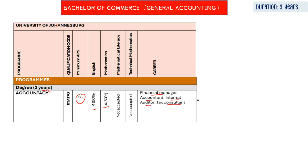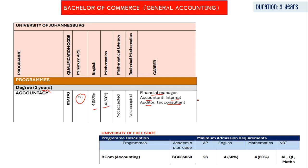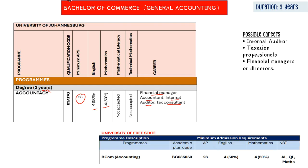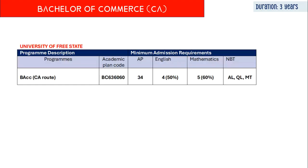With a degree in accounting you can become a financial manager, accountant, internal auditor, or tax consultant. This is general accounting — it is not the CA route that leads to becoming a chartered accountant. The same requirements apply at the University of the Free State. Now let's look at the route that leads to chartered accountancy: the Bachelor of Commerce in CA, the CA route.